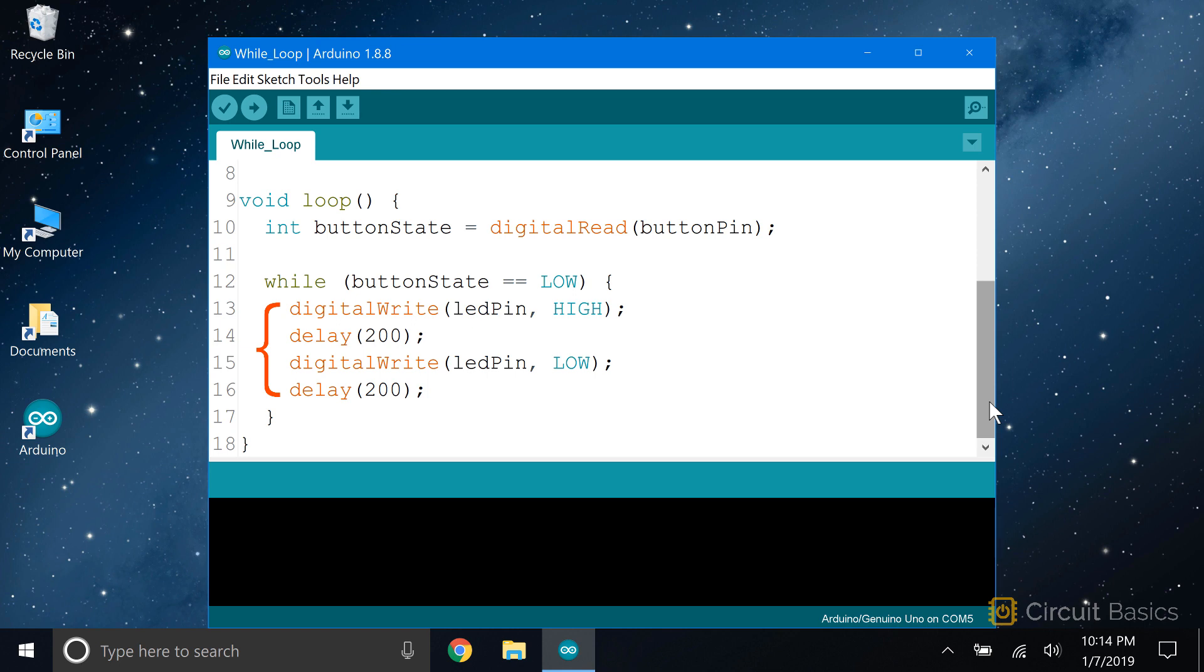Since this is a boolean data type, the condition will only be false when buttonState is high. So as long as the button is pressed, it's going to keep blinking the LED on and off with this code here.